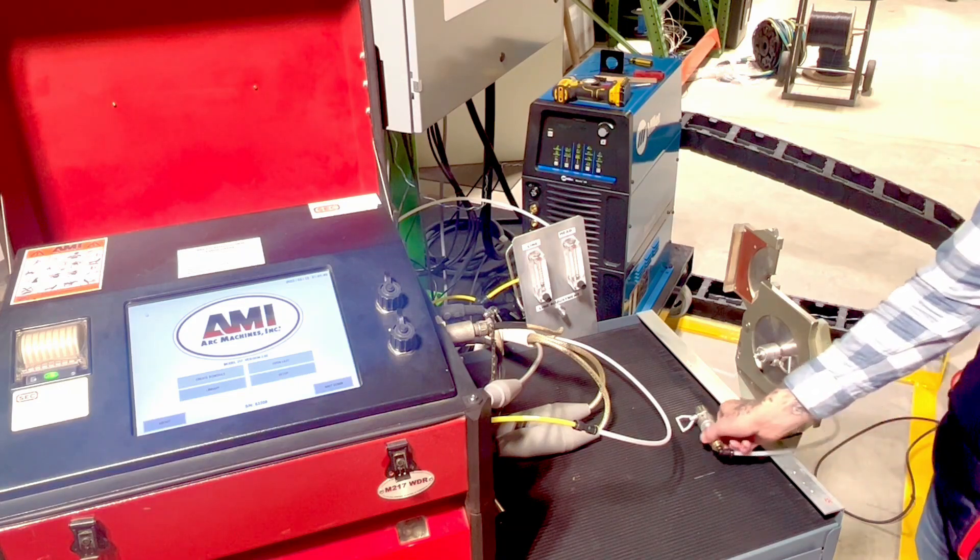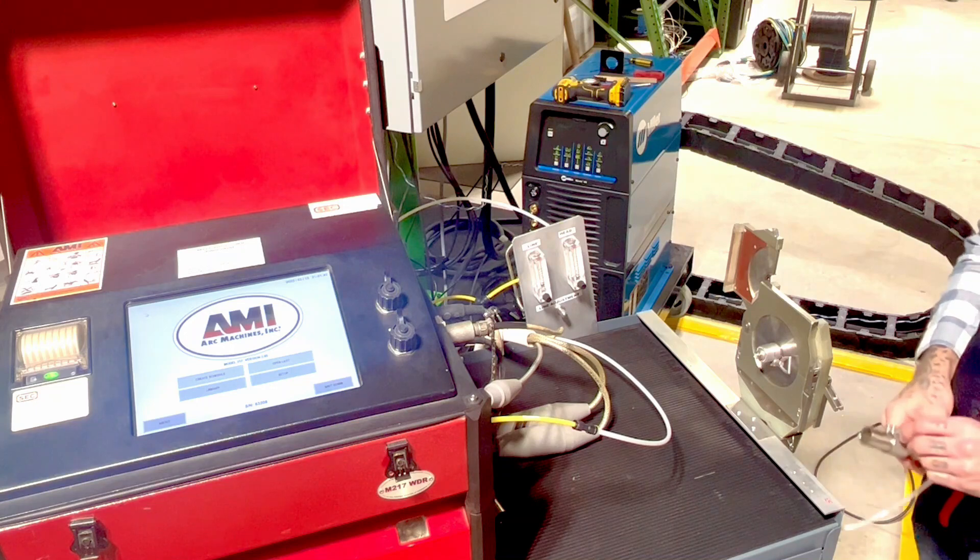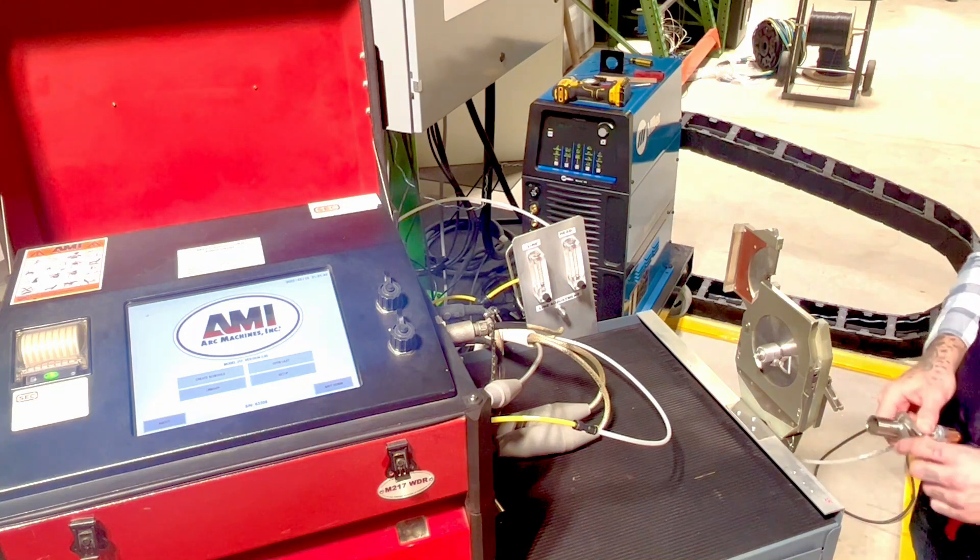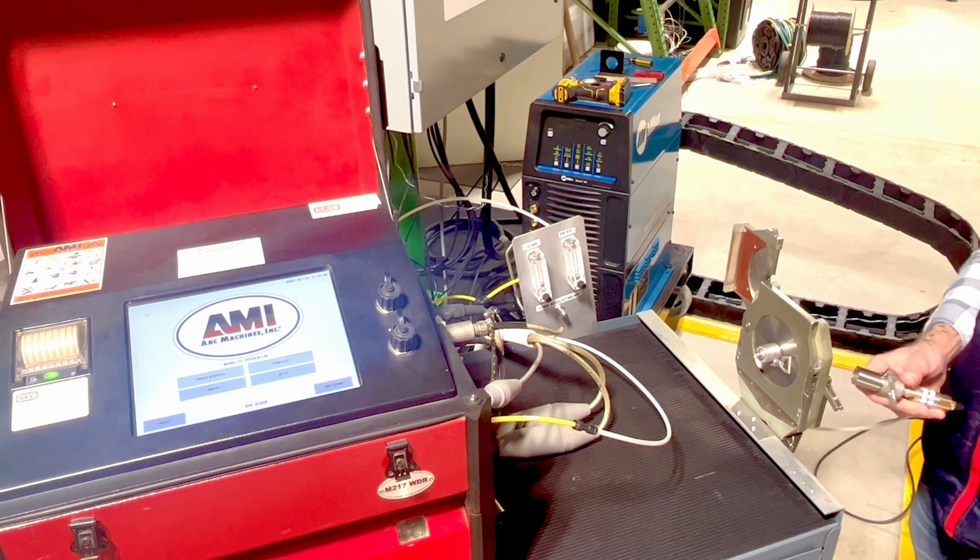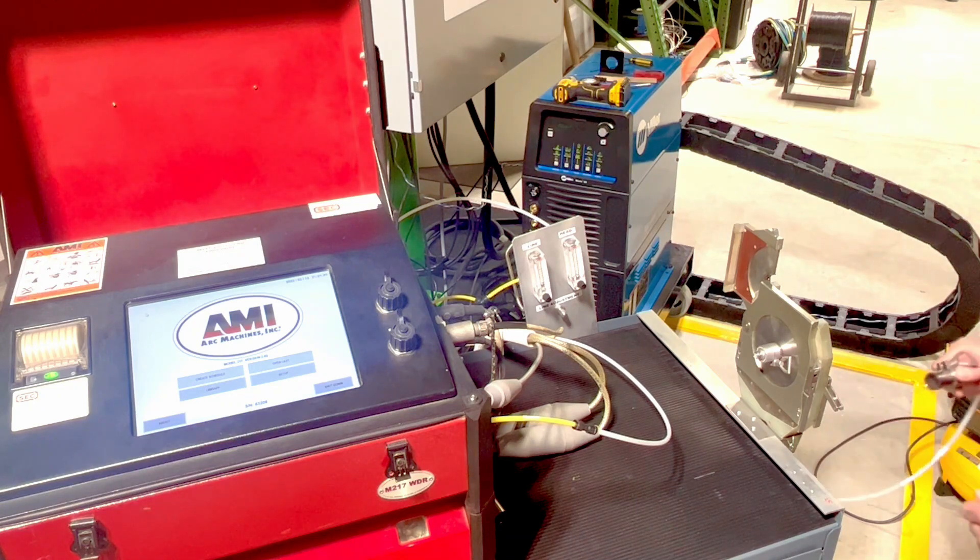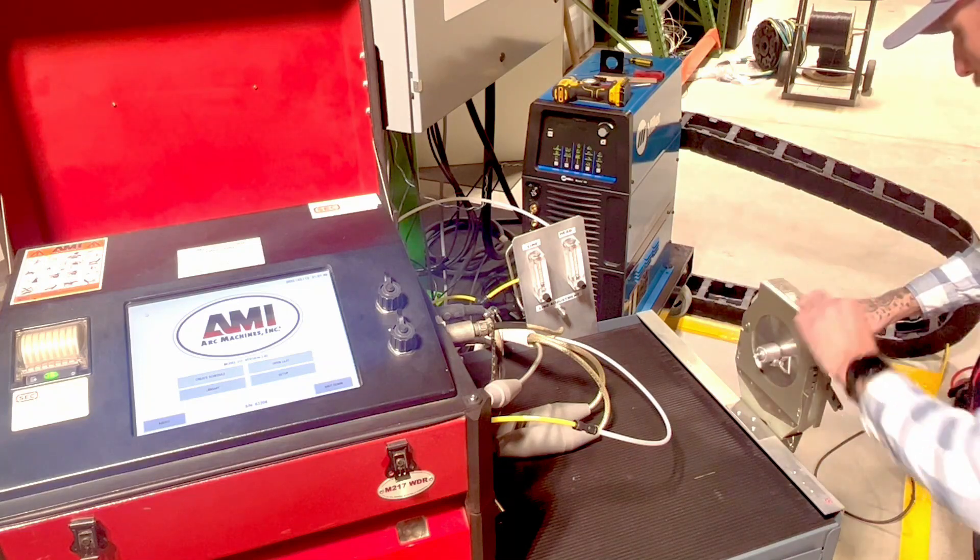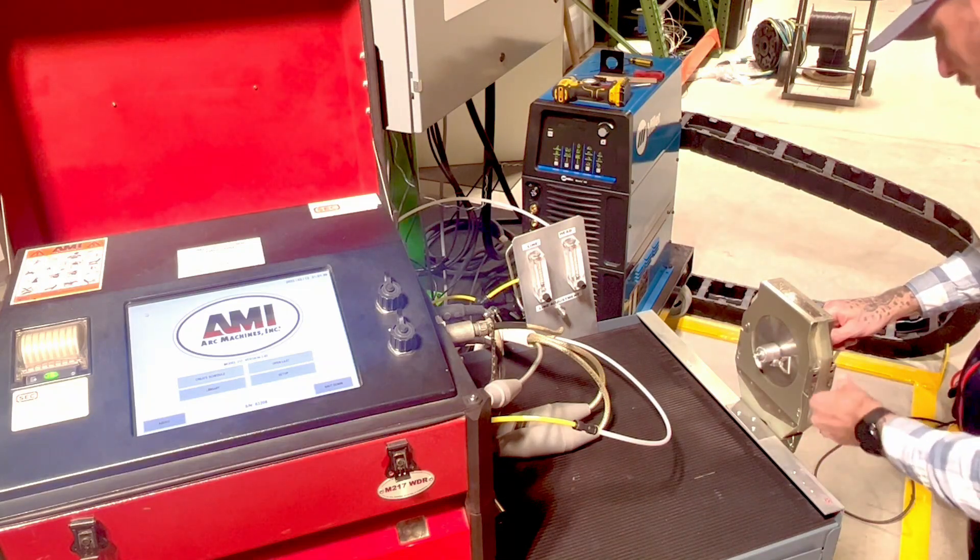So today we're going to be using this one inch 316L. We've already got these pre-cut pre-face coupons that we use facers and saws out of our rental fleet. Let's get this all set up. You'll also notice that we've got a purge set up here that we're going to get going here in just a second.